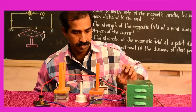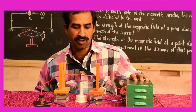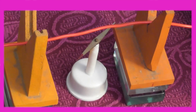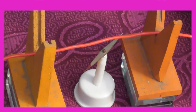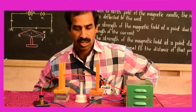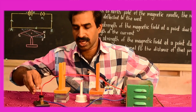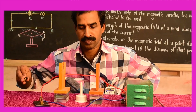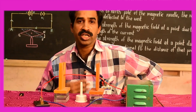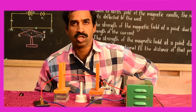As I switch on, just check the deflection. It is very clear the north pole of the magnet gets deflected towards the west. If I switch off the current — that is, unplug the key — the flow of current stops and the magnetic needle returns to its original position and aligns itself in the north-south direction.